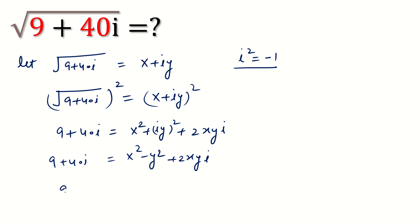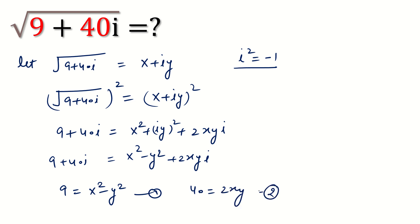Now if we compare the real part and imaginary part, we can write: the real part gives 9 is equal to x squared minus y squared — this is equation 1. And the imaginary part gives 40 is equal to 2xy — this is equation 2.